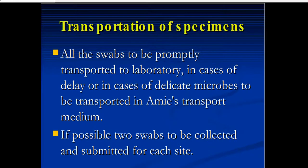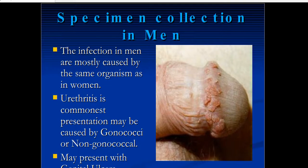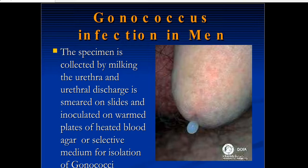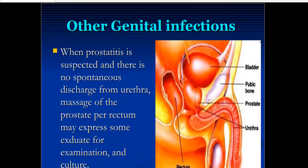All swabs must be promptly transported to the laboratory; in case of delay, delicate microbes should be transported in Stuart's transport medium. If possible, two swabs should be collected and submitted for each site. For specimen collection in case of gonorrhea in men, urethritis is the common presentation and may be caused by gonococci. The urethral discharge can be collected on slides and inoculated on warmed plates of heated blood agar or selective medium for isolation of gonococci.